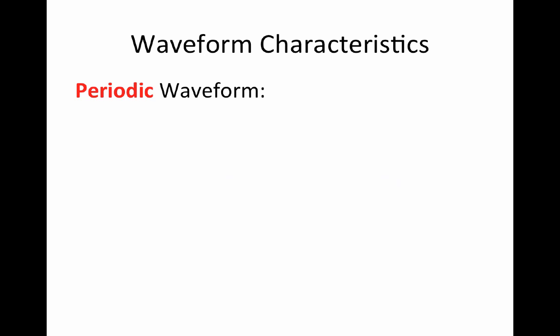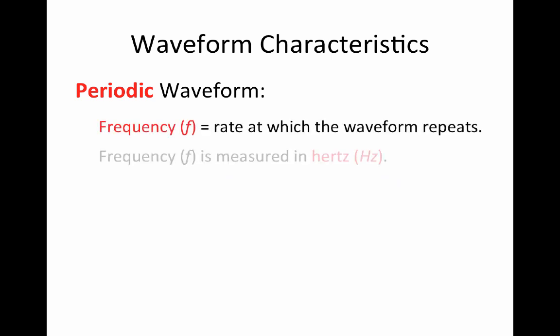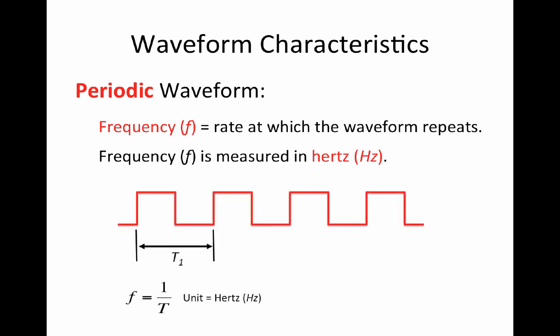The rate at which a periodic waveform repeats itself is referred to as its frequency, F, and is measured in Hertz. The frequency, F, of a digital pulse waveform is the reciprocal of the period, F is equal to 1 over T.